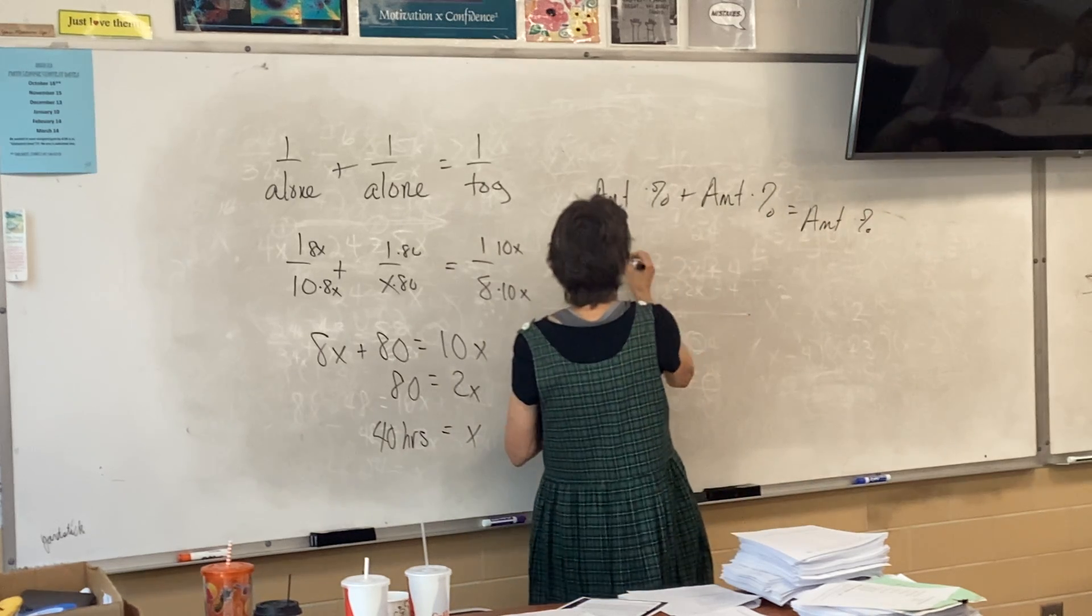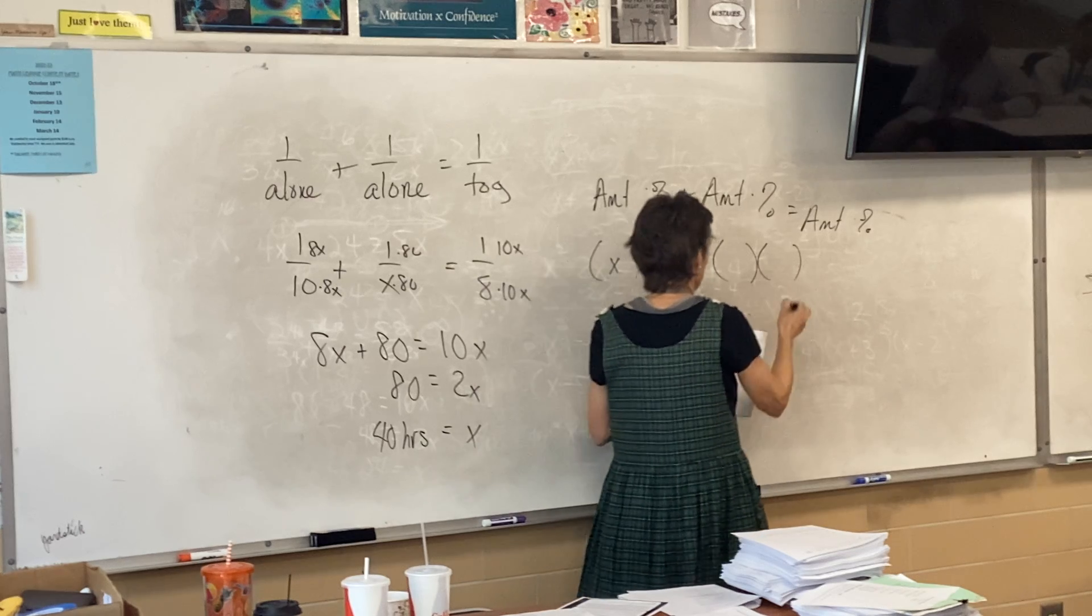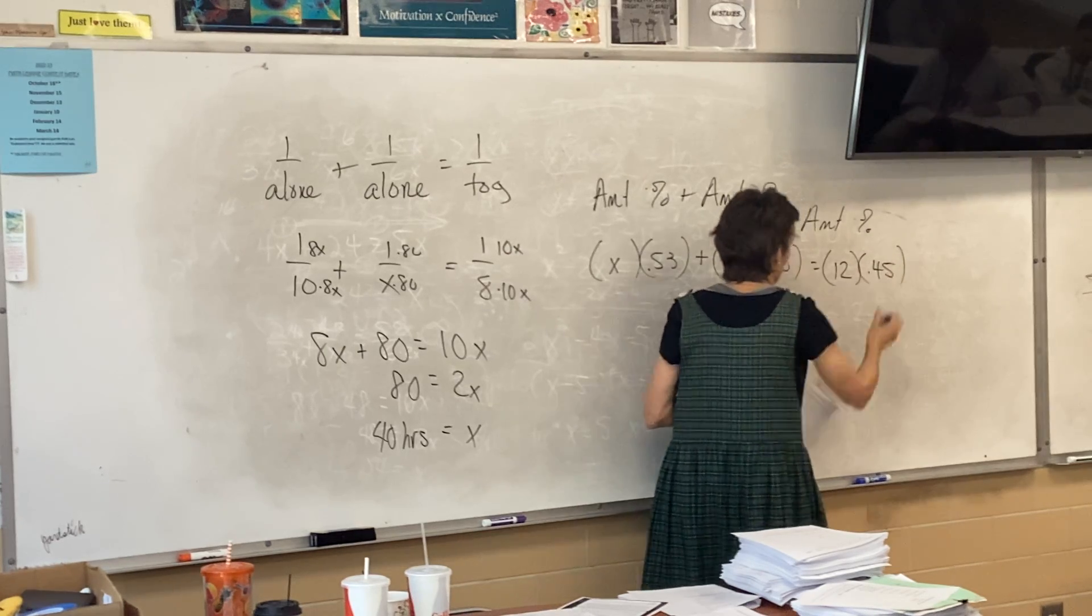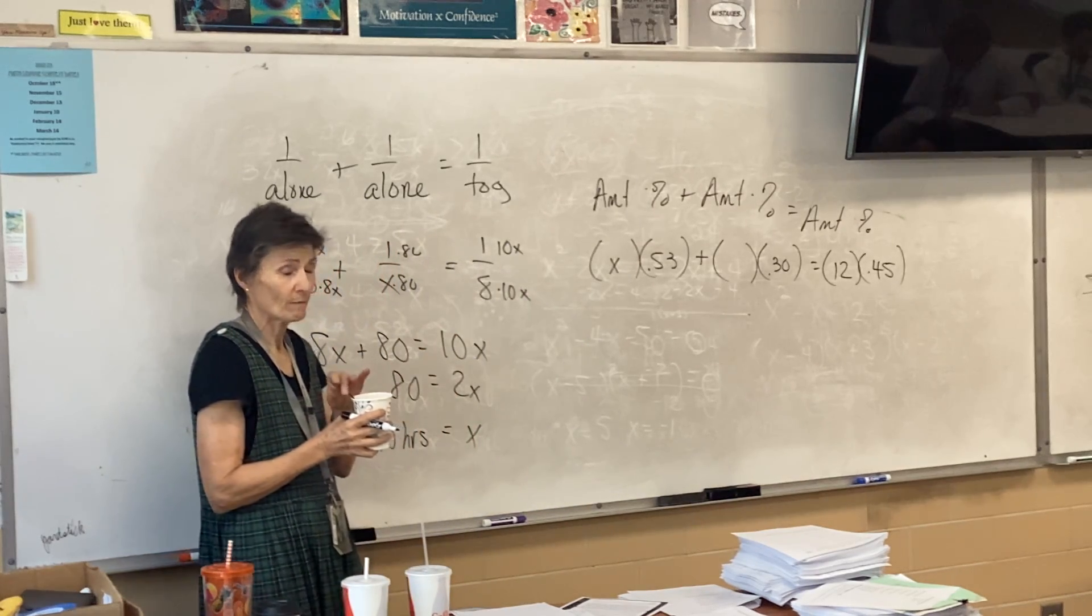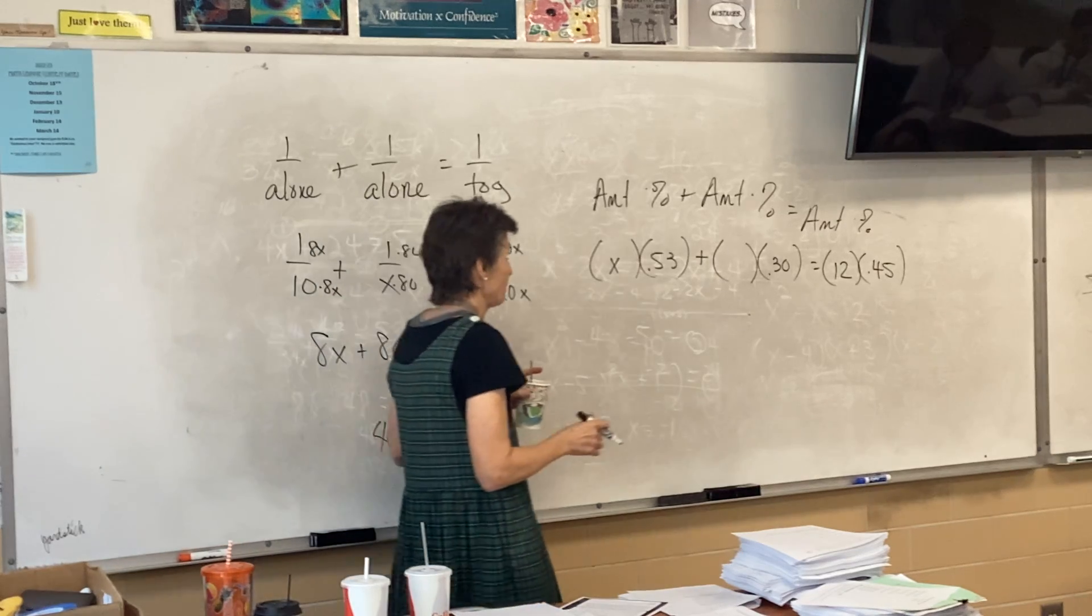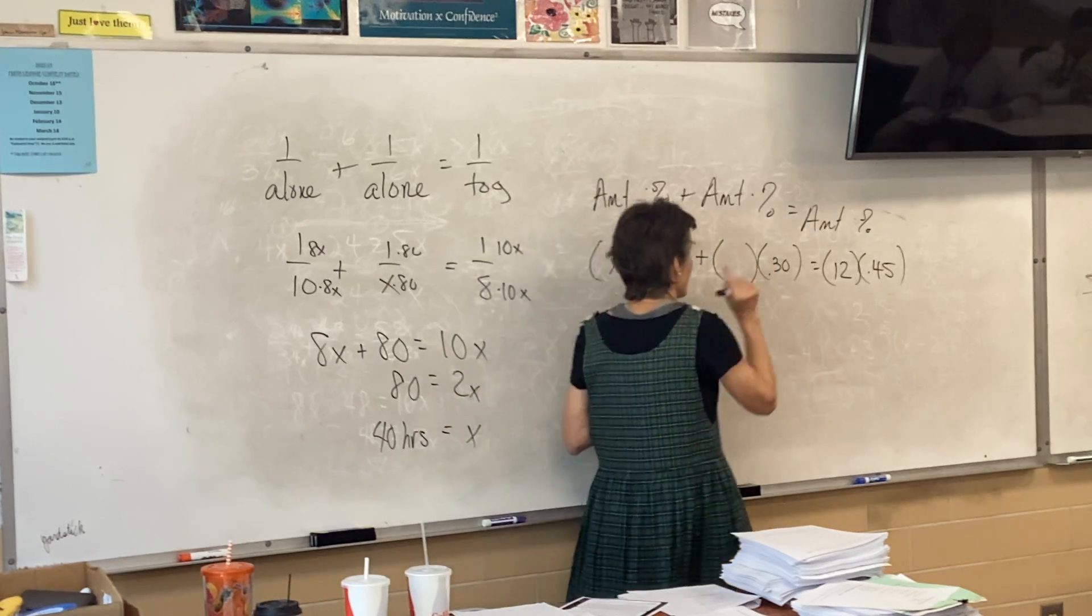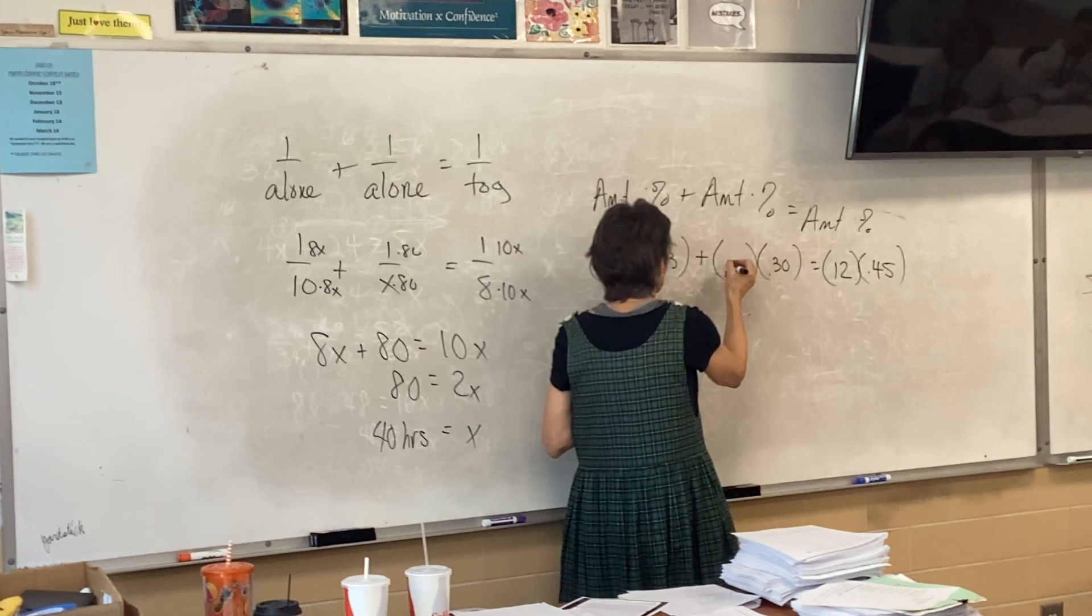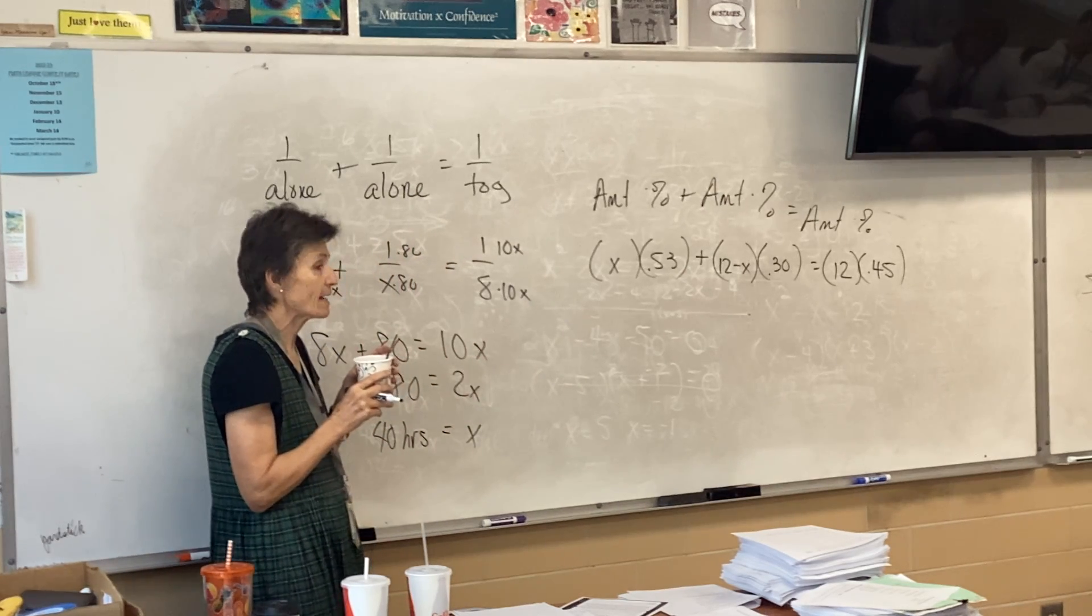How much 53 percent should be mixed with a 30 to get 12 gallons of a 45 percent? So I kind of just filled everything in as I went. Every time we do this we end up with one parenthesis that's empty. What do we put in it when it's right here? 12 minus x. It's got to be the number first. When it's added it doesn't matter, when it's subtracted it has to be the number first.